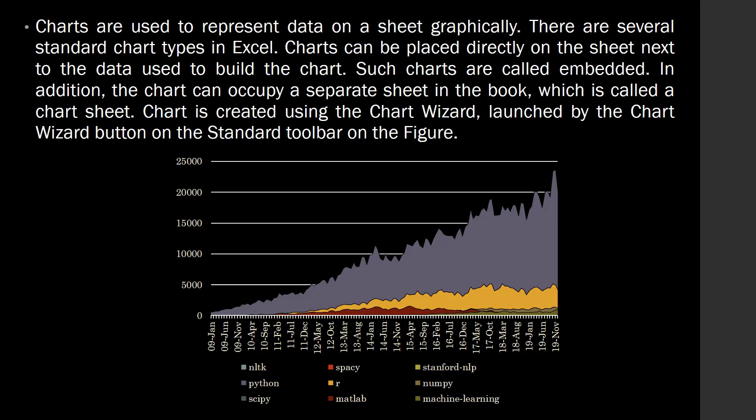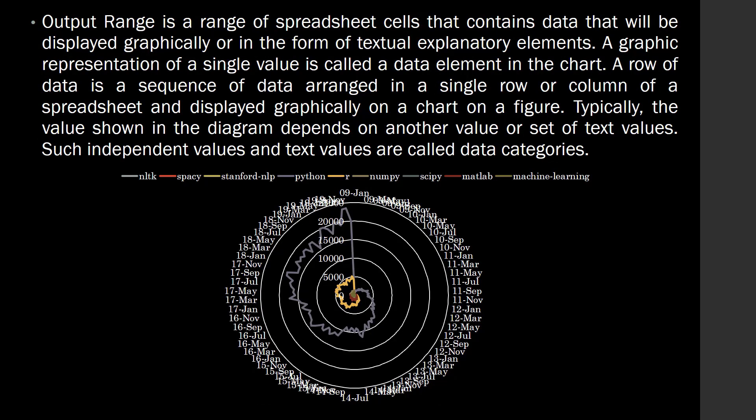Charts are used to represent data on a sheet graphically. There are several standard chart types in Excel. Charts can be placed directly on the sheet next to the data, called embedded charts, or the chart can occupy a separate sheet in the workbook, called a chart sheet. A chart is created using the Chart Wizard button on the standard toolbar. The output range is a range of spreadsheet cells containing data to be displayed graphically or as textual explanation elements. A row of data is a sequence of data arranged in a single row or column of a spreadsheet, displayed graphically on the chart. Typically, the value shown in the diagram depends on another value or set of text values, called data categories.